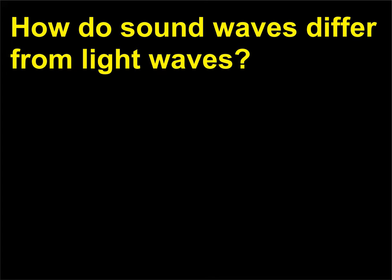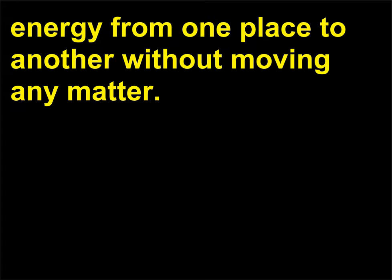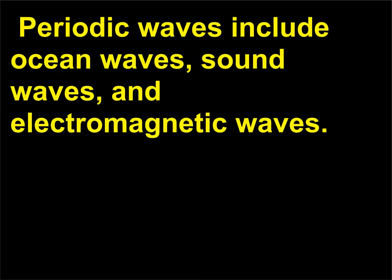How do sound waves differ from light waves? Waves consist of a series of motions in regular succession carrying energy from one place to another without moving any matter. Periodic waves include ocean waves, sound waves, and electromagnetic waves.